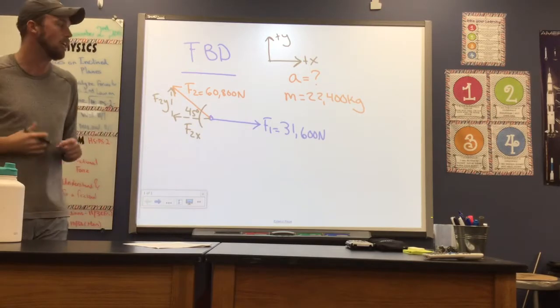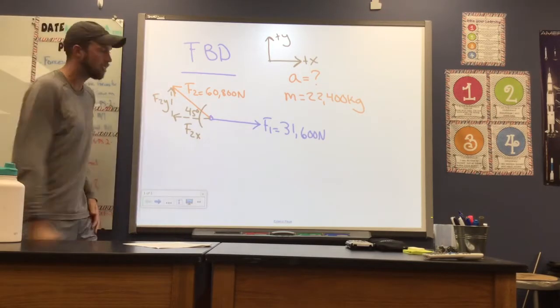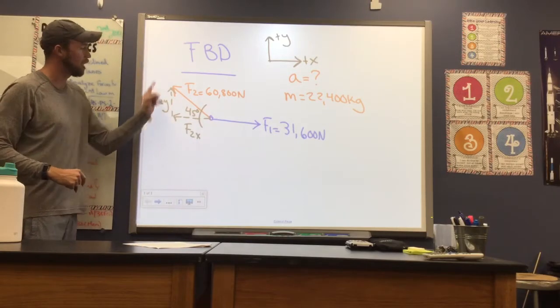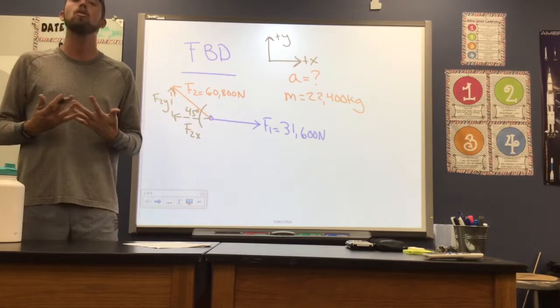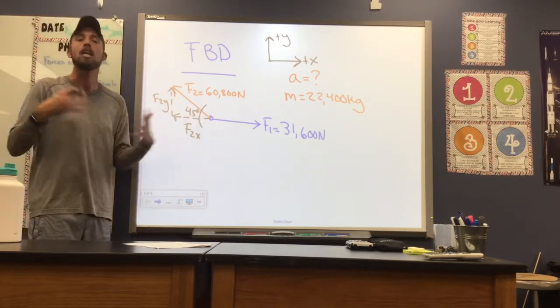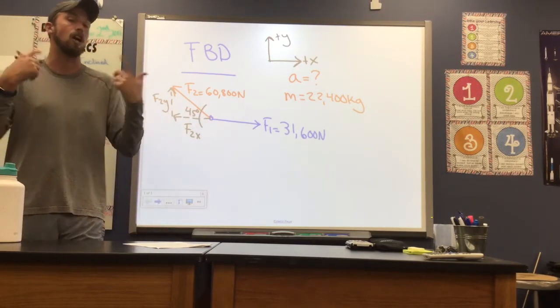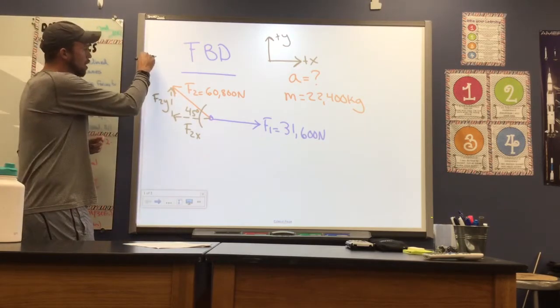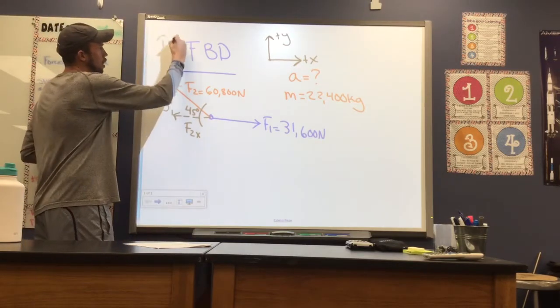And so as you'll see we have now two forces in the X - F1 and F2 in the X - and one force in the Y, F2 in the Y. And what we're going to have to do here is find our acceleration in both directions to find our what we call resultant, our overall acceleration.